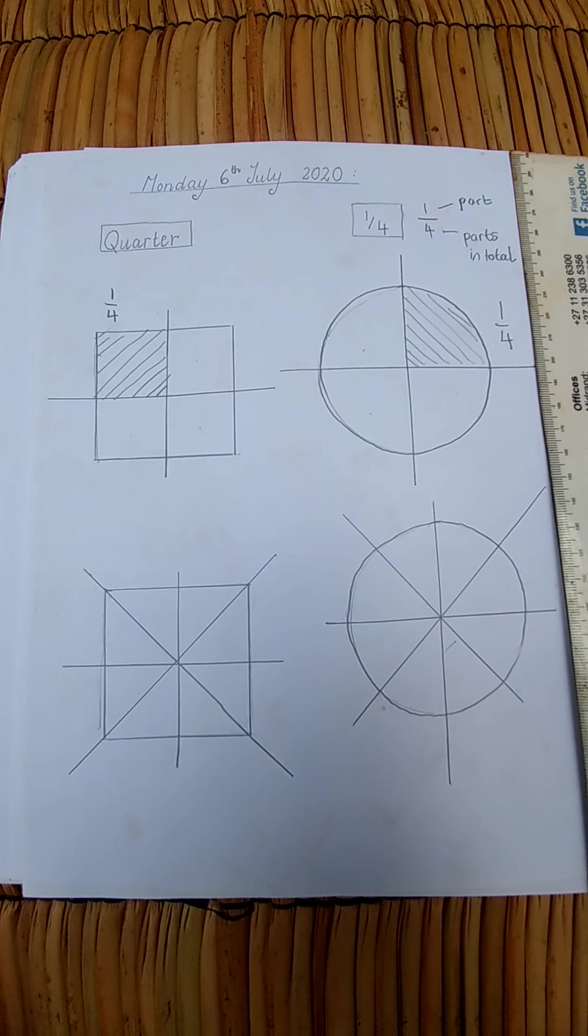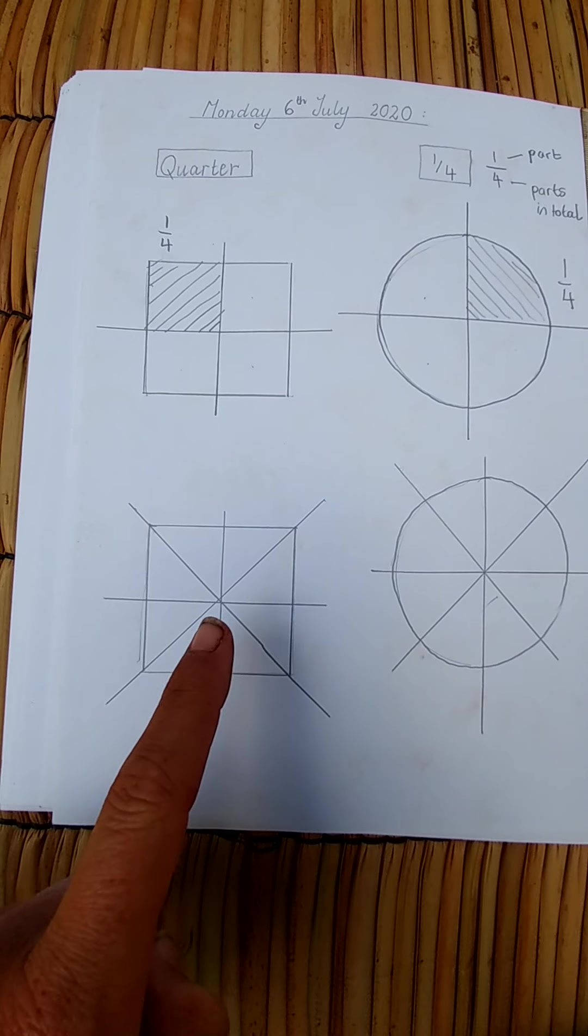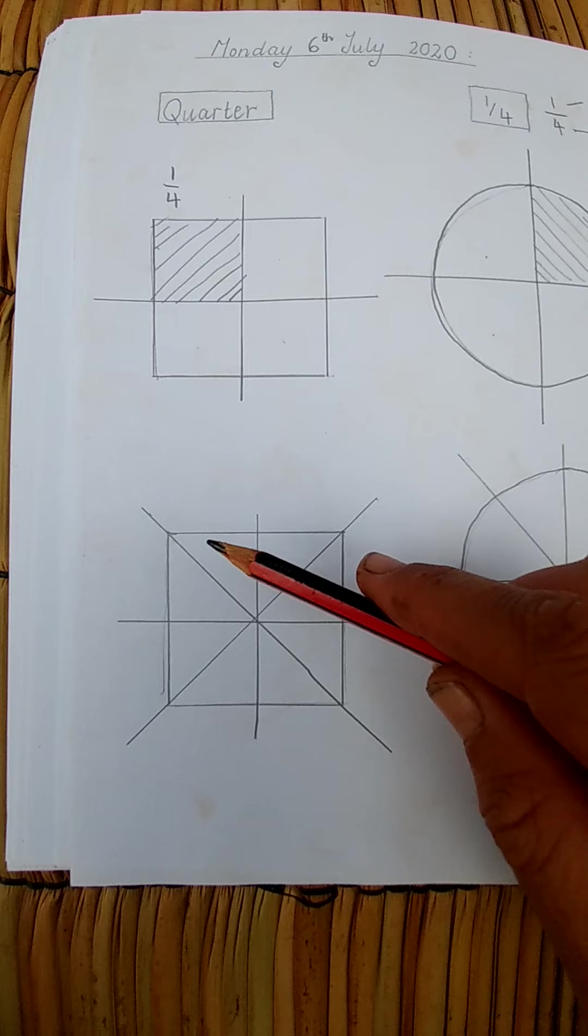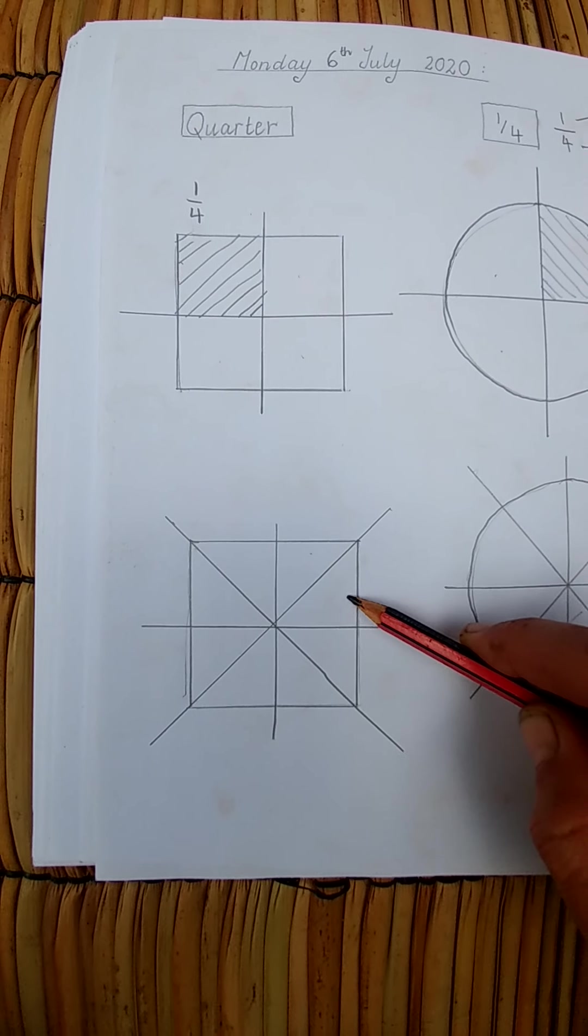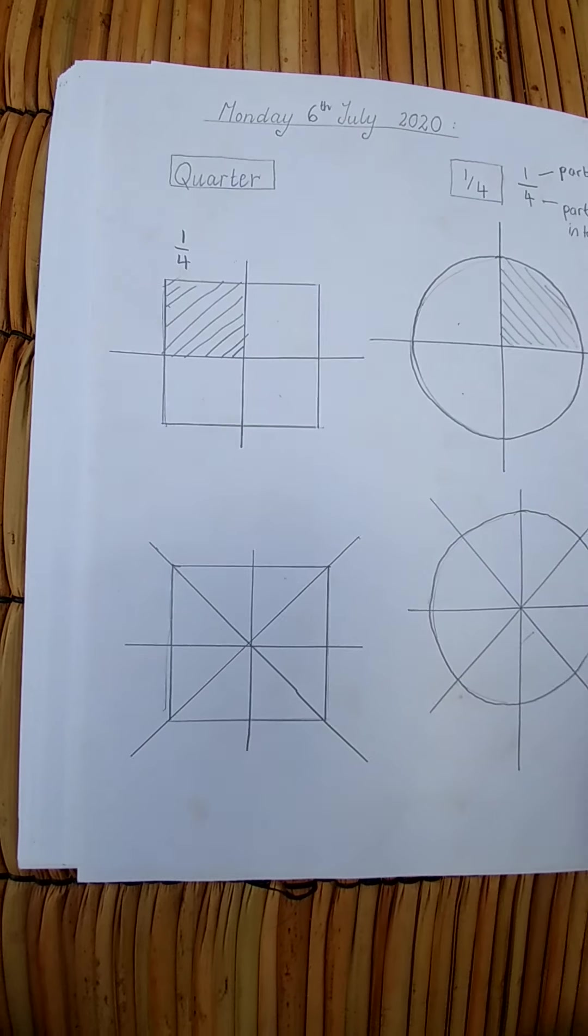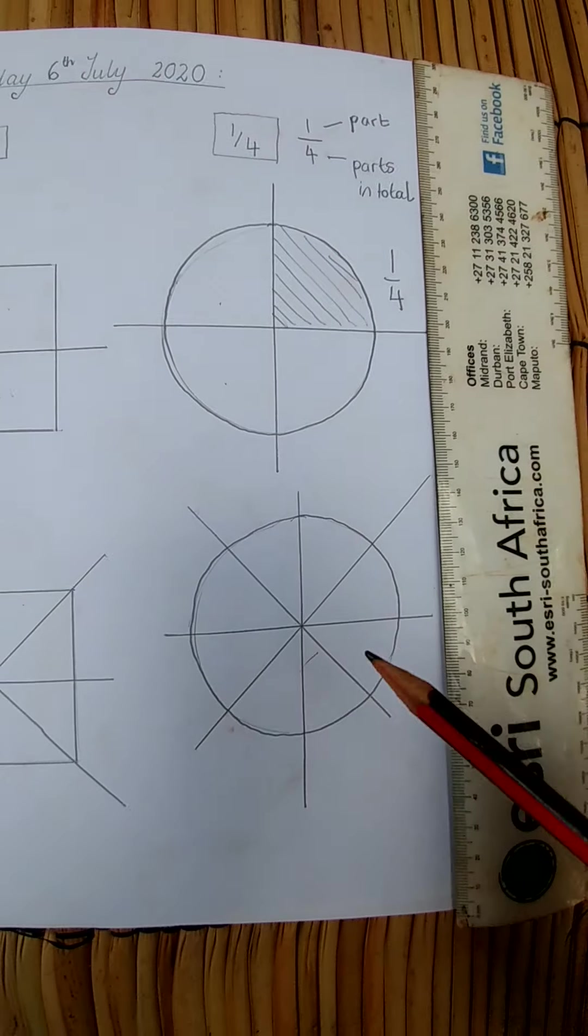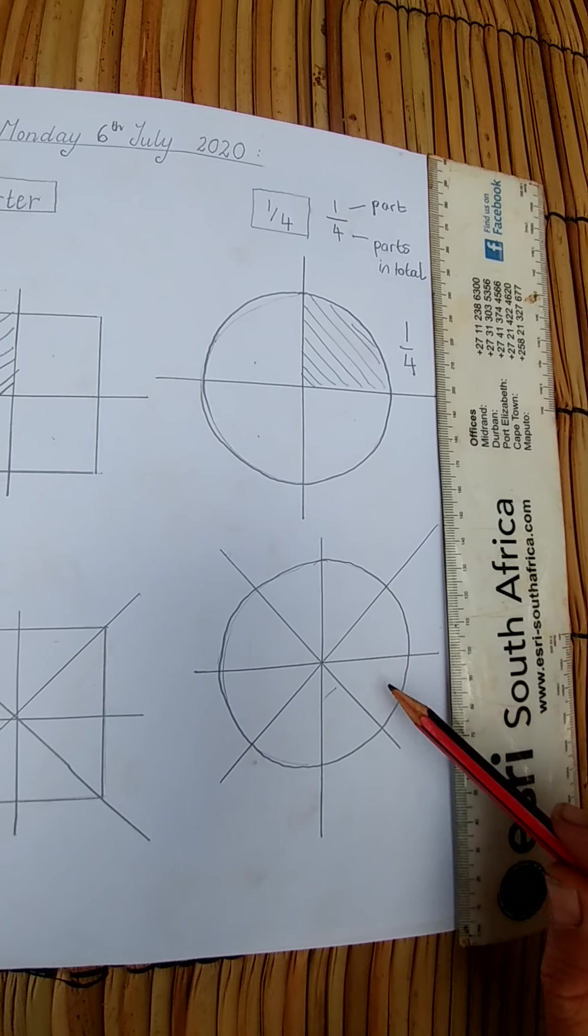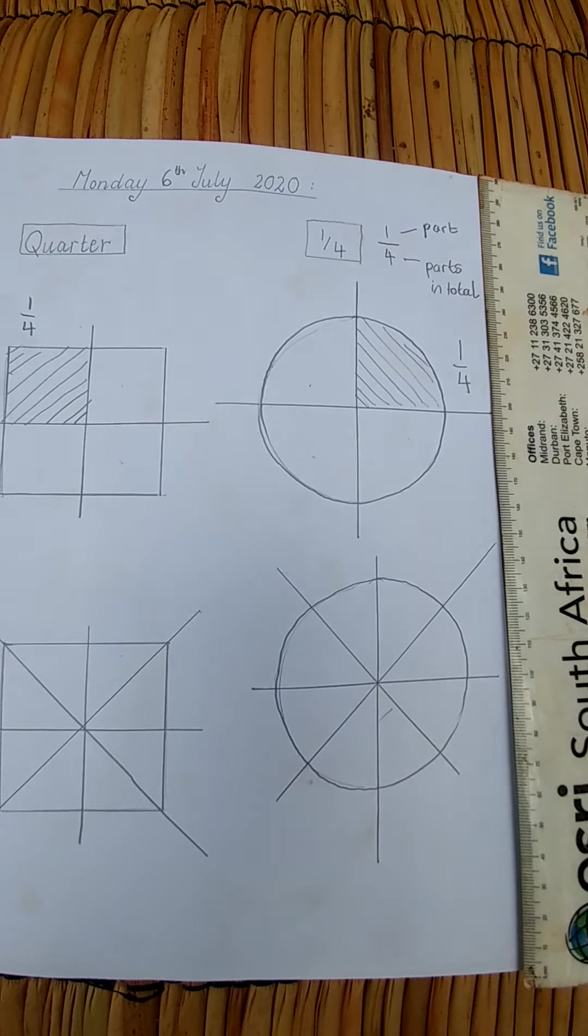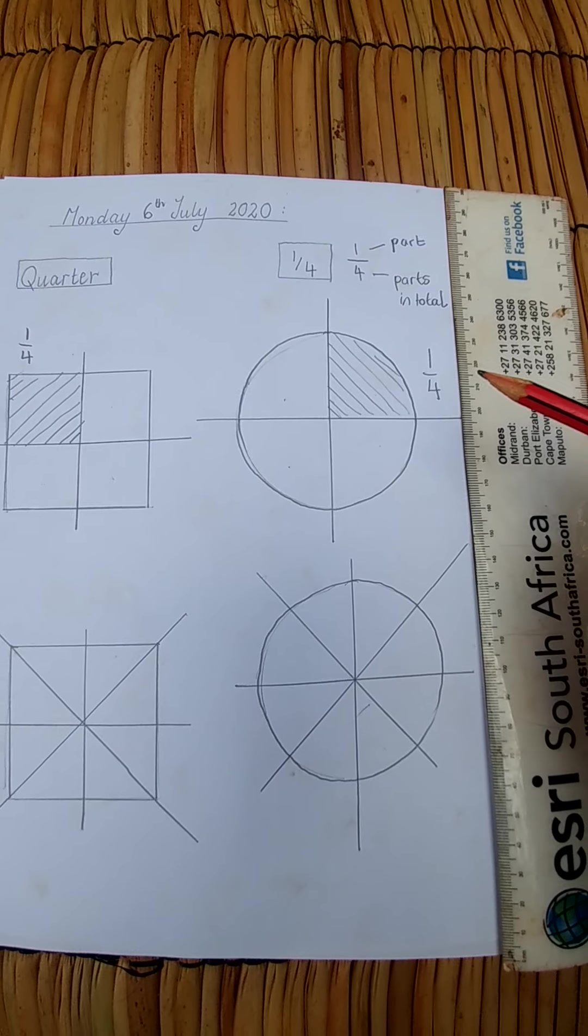I have divided these ones up again and now let's count how many parts we have in the square. We have one, two, three, four, five, six, seven, eight parts. And here in the circle we have one, two, three, four, five, six, seven, eight.